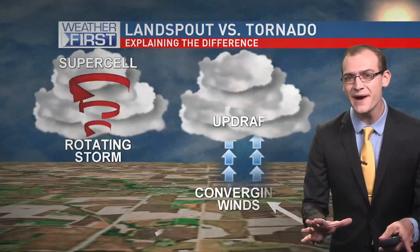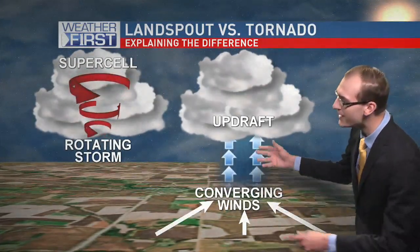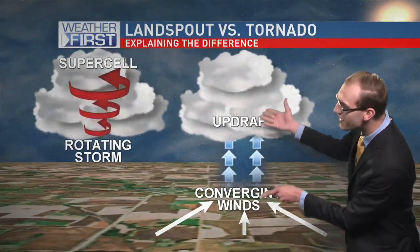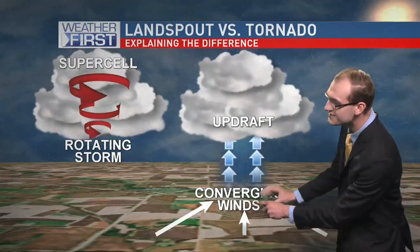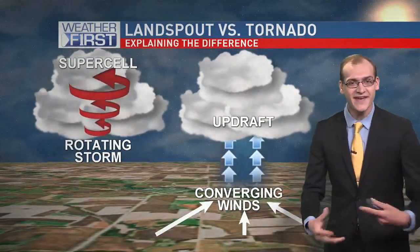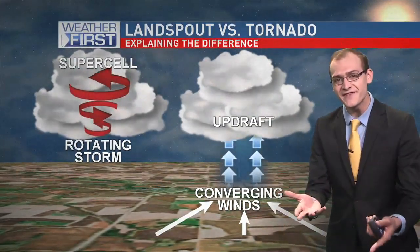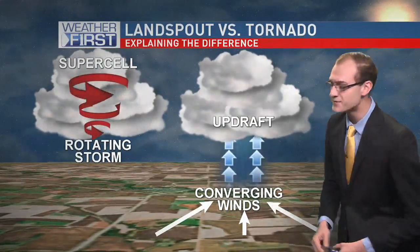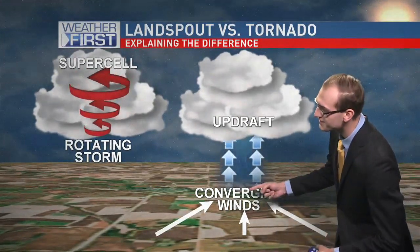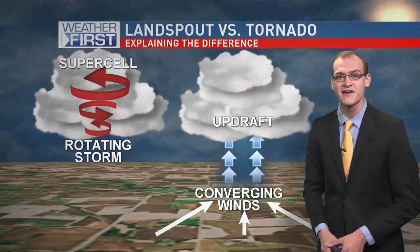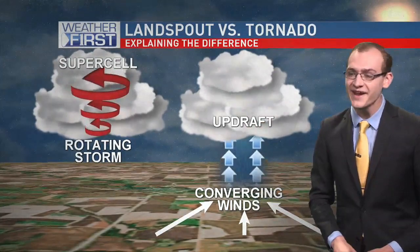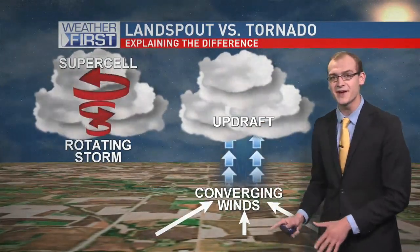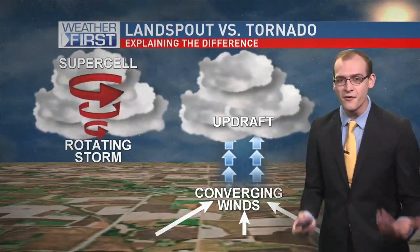Land spouts are a little bit different. They're formed by just the updraft of the storm itself. You have all the wind converging at the surface, and that's what then gets lifted by the updraft. A little bit of rotation at the surface gets lifted by the updraft, and that then produces a land spout. So still technically a tornado, but it forms in a very different way.